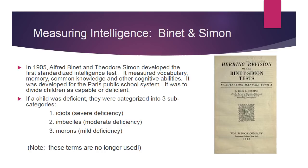It was developed for the Paris public school system to divide children as either capable or deficient. If a child was deficient, they were categorized into three subcategories. Idiots were severe deficiency, imbeciles had a moderate deficiency, and morons had a mild deficiency. These terms are considered horrible today, but a hundred-plus years ago they were considered appropriate in this context. Note: these terms are no longer used in any academic setting.